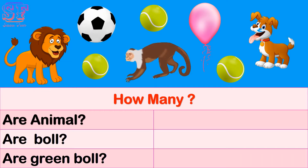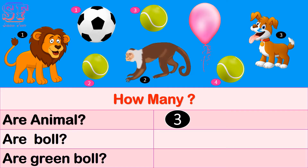How many animals can you see? One, two, three — three animals. How many balls can you see? One, two, three, four — four balls. How many are green balls? One, two, three — three green balls.